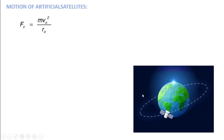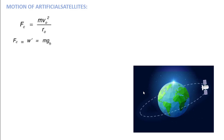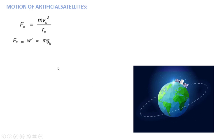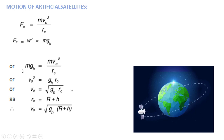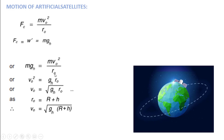This centripetal force causes the satellite to revolve around the Earth in orbit. The satellite's weight acts downward toward the Earth. The weight is W = mgh. Since the satellite is at height h above the Earth, it is not attached to the surface. Now we have two forces. Comparing the two equations: mgh = mv₀²/r₀. Cancelling m from both sides and rearranging gives: v₀² = g·h·r₀, and after multiplying r₀ across we have the expression for v₀².